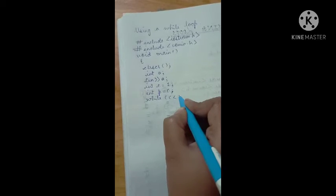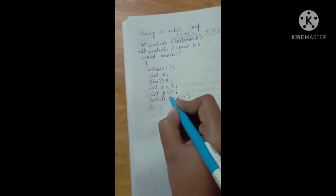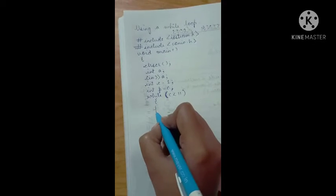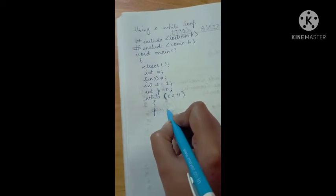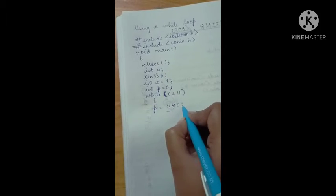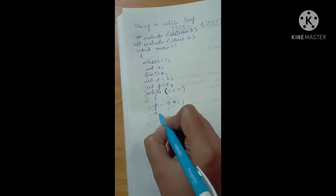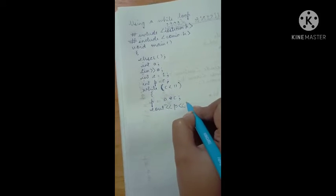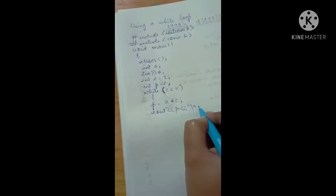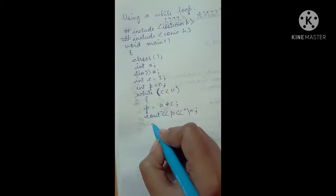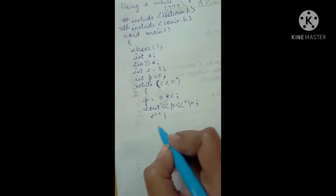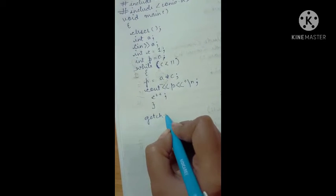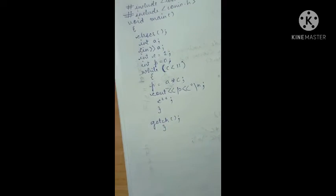Now here we give the loop: while(c < 11). We open braces and inside we write p = a * c, then cout << p, then c++. Then we close the loop, add getch(), and close the program.